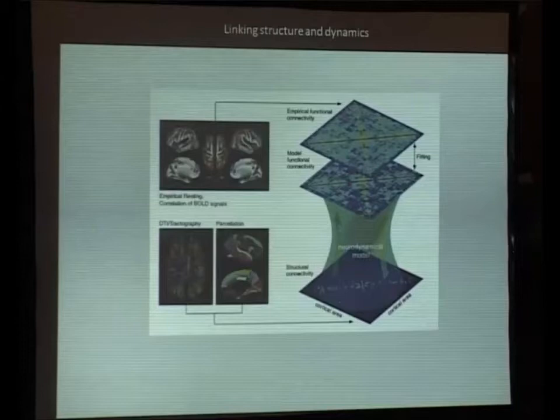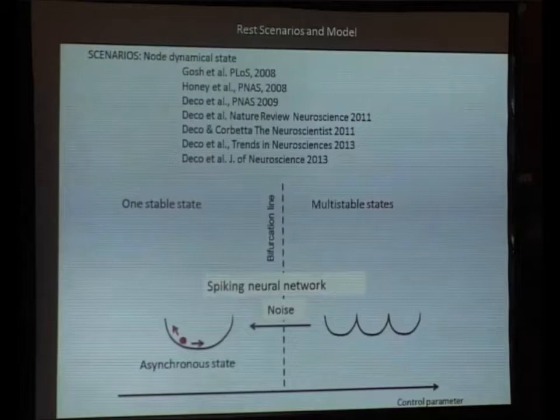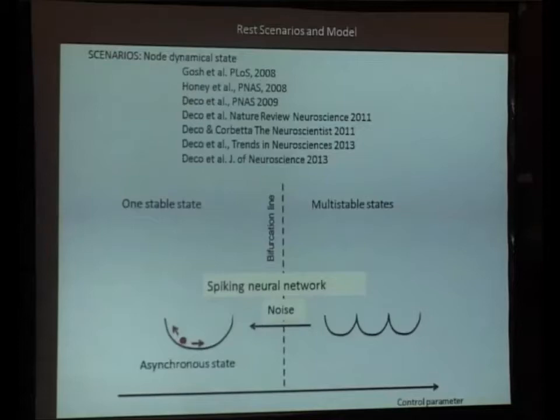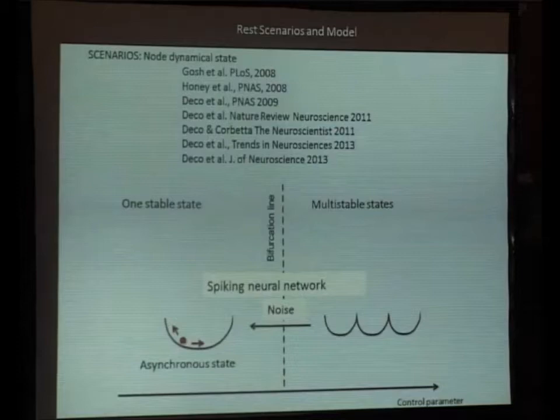You do exactly the same in the model. How many areas? In this case, what I'm presenting is 66 areas. In general, it depends on the parcellation we use. We usually use the Hackman parcellation with 66 areas. If we include subcortical areas, we go to 100; if we use other standard parcellations, we go to 120.